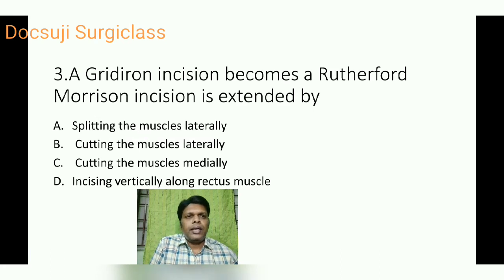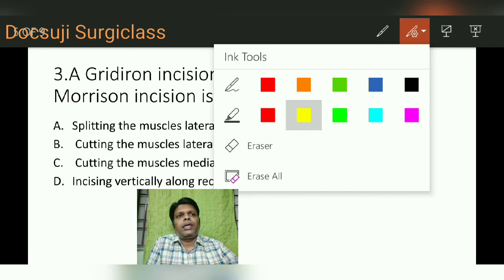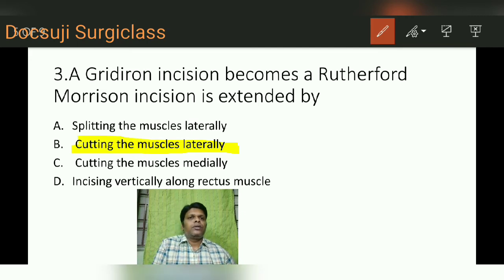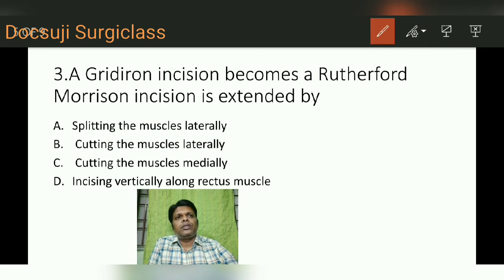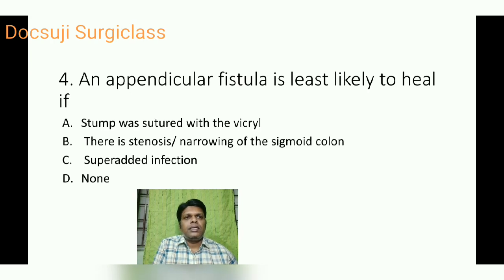The third question: grid iron incision becomes a Rutherford Morrison incision if it is extended by cutting the muscles laterally. As just discussed, cutting the muscles on the lateral aspect converts the grid iron into a Rutherford Morrison incision.